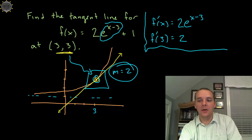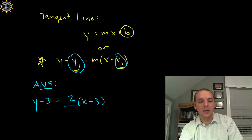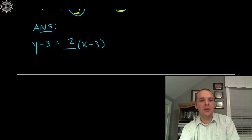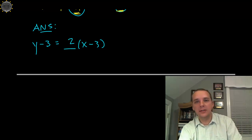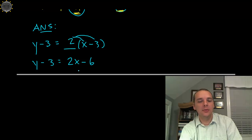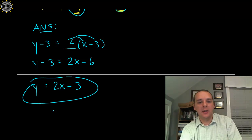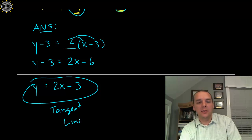Okay, so plug this in, so y minus 3 equals 2 times the quantity x minus 3. Most instructors would actually prefer to have this answer back in slope intercept form, so let's give it to them in slope intercept form. Y minus 3 equals 2x minus 6, when we distribute this 2, add the 3 to the right hand side. Y equals 2x minus 3, okay. So here's our tangent line paired with that original exponential function.